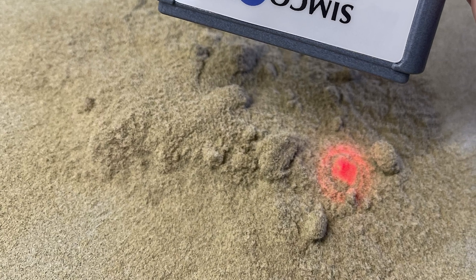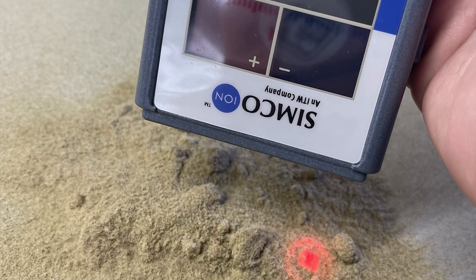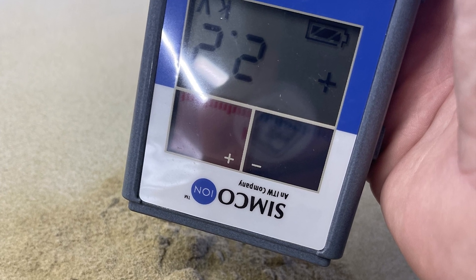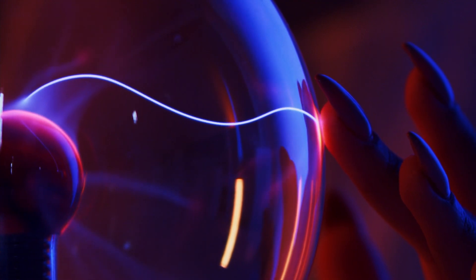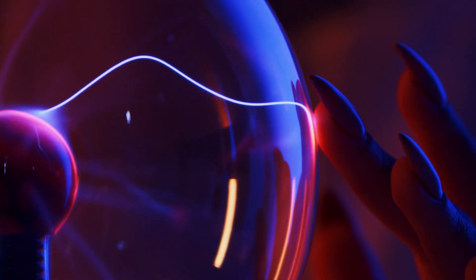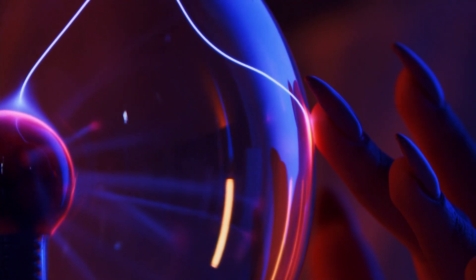To begin with, particles become charged when two materials come into contact and then separate. There's often a transfer of electrons between the materials, which can leave one material with a net positive charge and the other with a net negative charge.